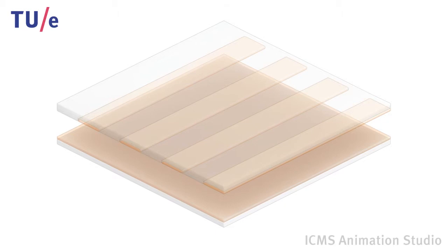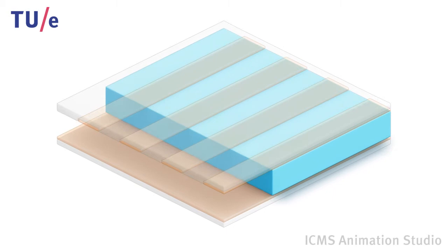We provide a method to create a polymer layer with a dynamic surface geometry. We start with two glass plates. One is provided with a striped indium tin oxide electrode pattern. The second has a continuous indium tin oxide film.